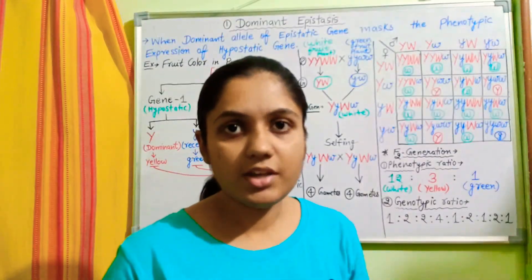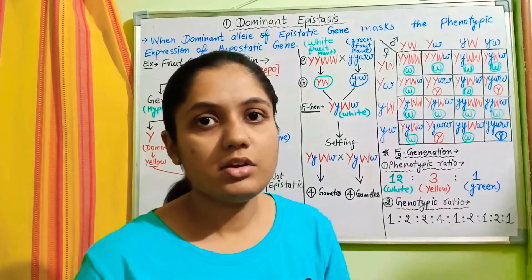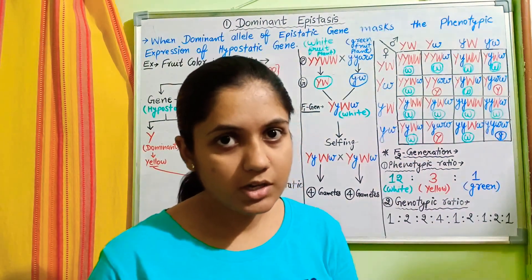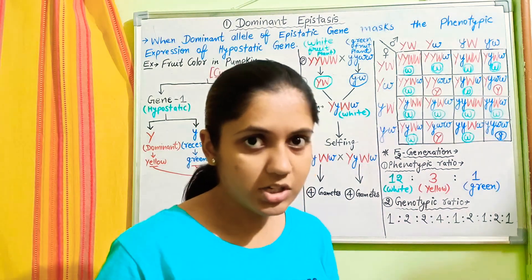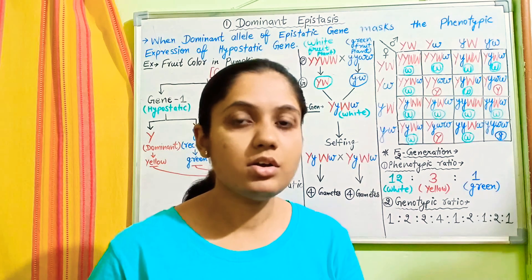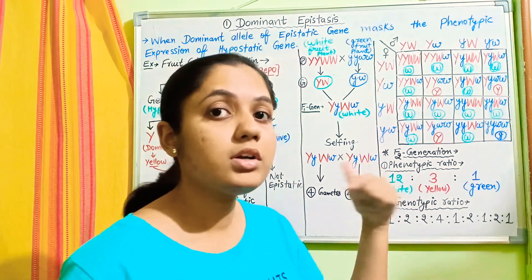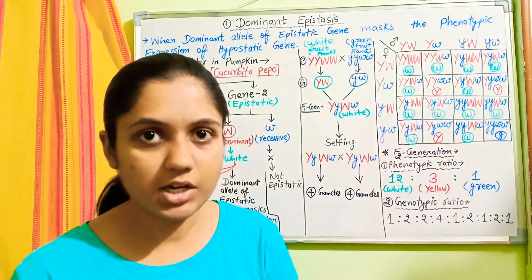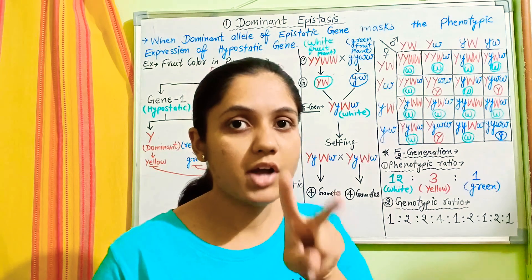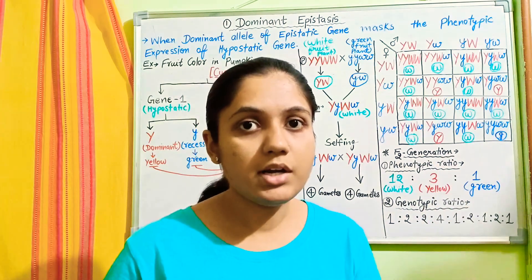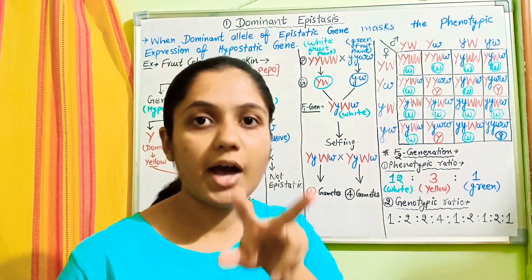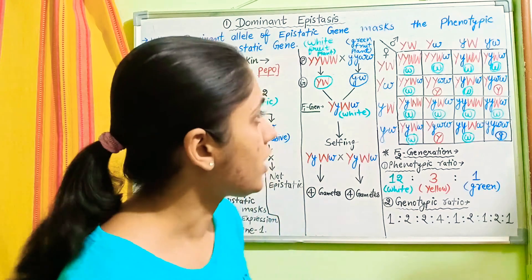As a reminder, epistasis is when a gene present at one locus suppresses or masks the phenotypic expression of another gene present at a different locus. I have already discussed what the epistatic gene and hypostatic gene are, and I covered the two types of epistasis — dominant epistasis and recessive epistasis — diagrammatically in the first video.